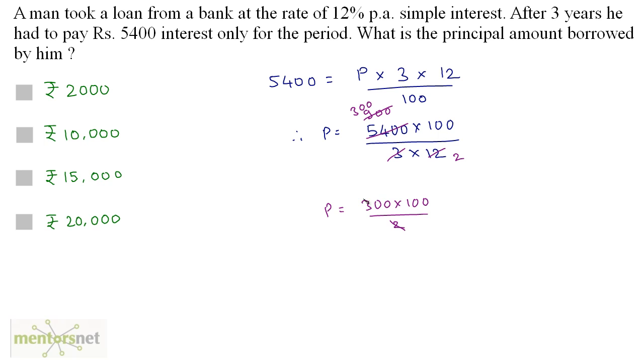So we have P equals 300 times 100 by 2. And 300 by 2 is 150. So this equals 15,000 rupees. So the amount borrowed, that is the principal, is 15,000 rupees. So option C is the correct answer.